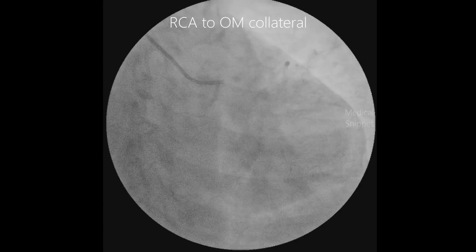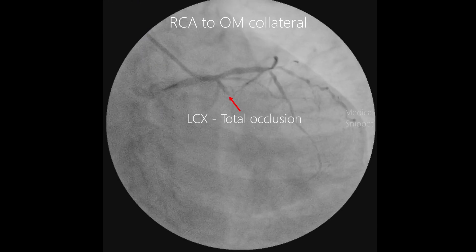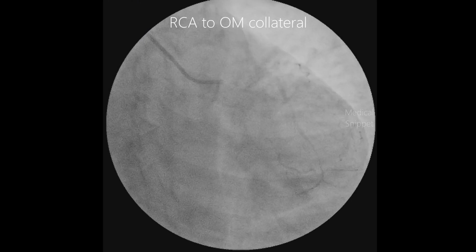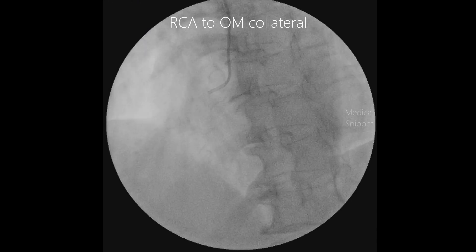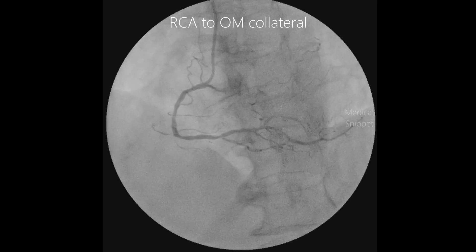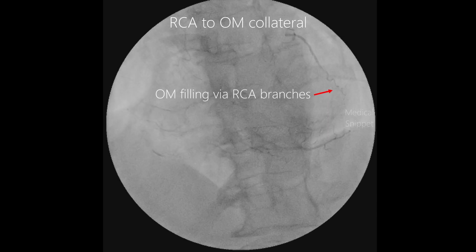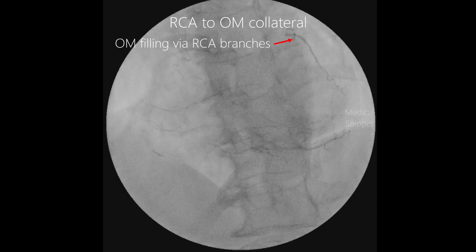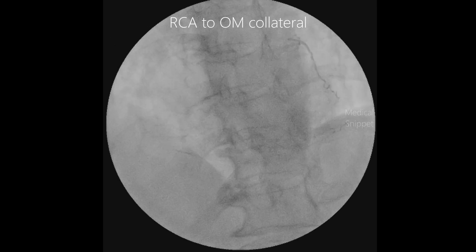The second case shows collateral from the RCA to the obtuse marginal branch of the left circumflex artery. In this angio shot, there is total occlusion of the left circumflex artery, and the obtuse marginal branch is being filled from the right coronary artery branches.